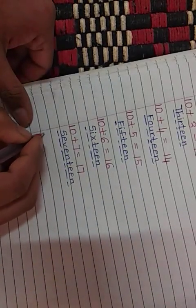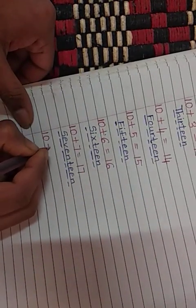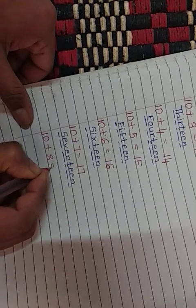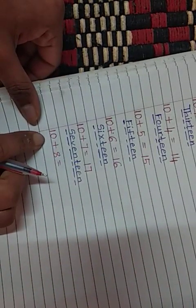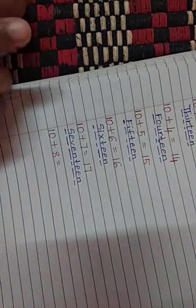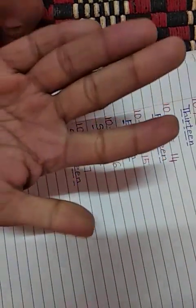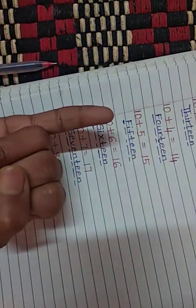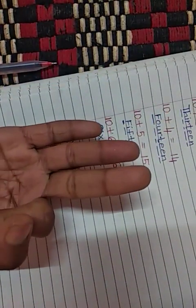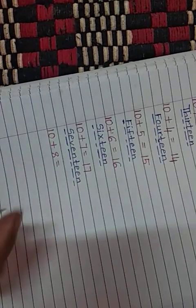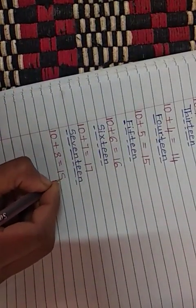Now, 10 plus 8. After 10 count till 8. So after 10 means 11, 12, 13, 14, 15, 16, 17. Then children, 18. Yes. So answer is 18.